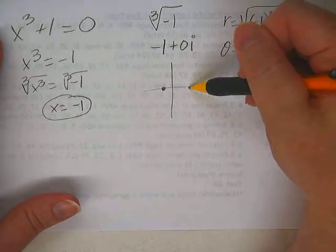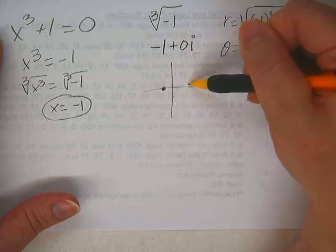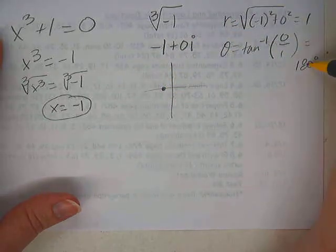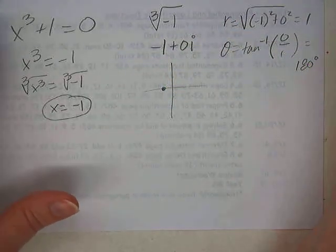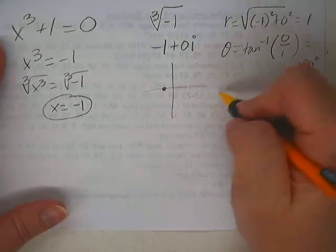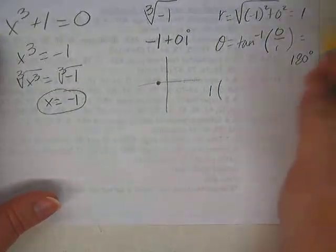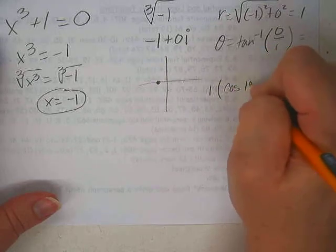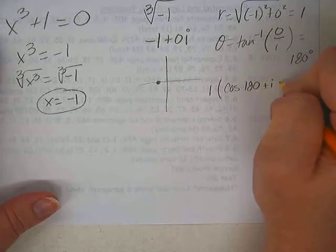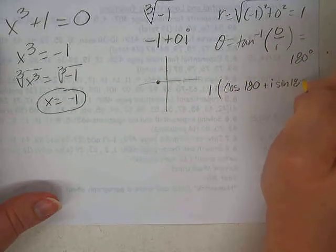Does that make sense? 0, 90, 180, 270, 180? So then our trig form would be 1, cosine 180 plus i sine 180.